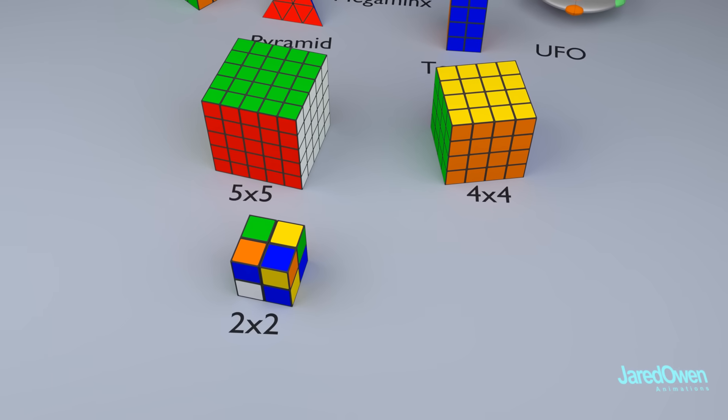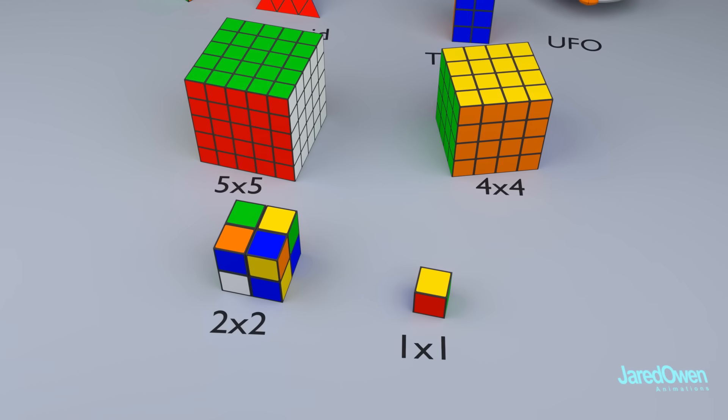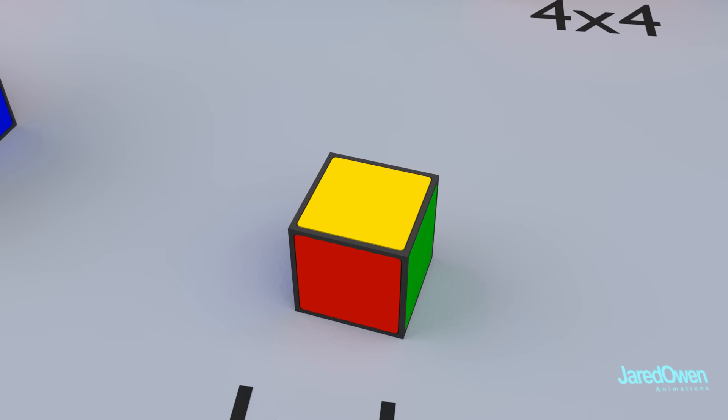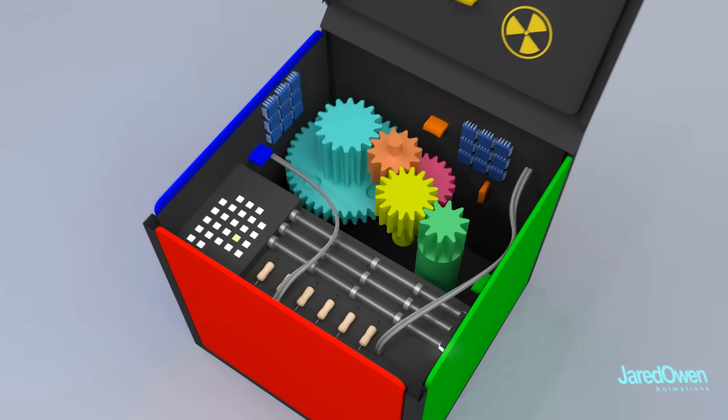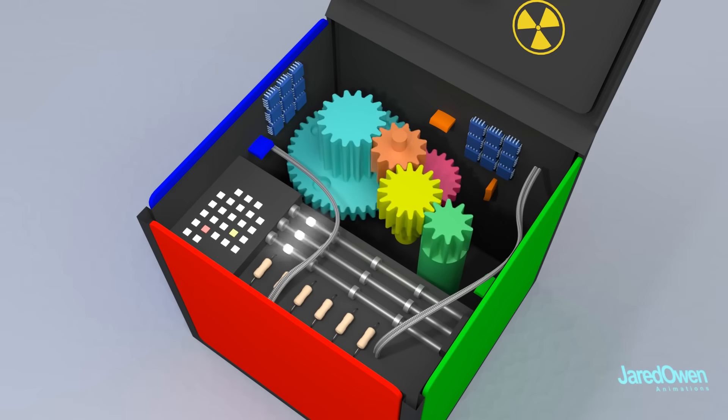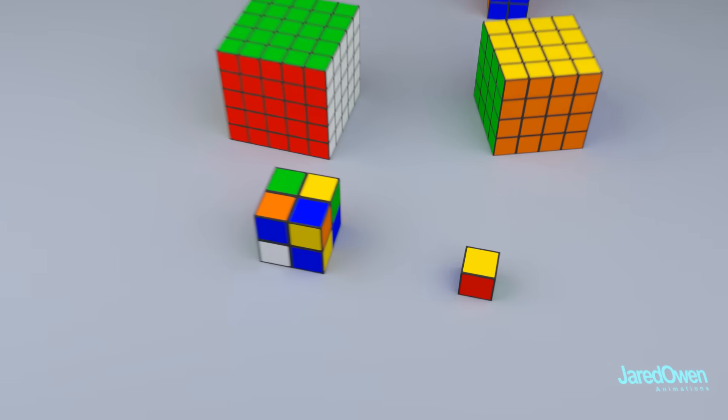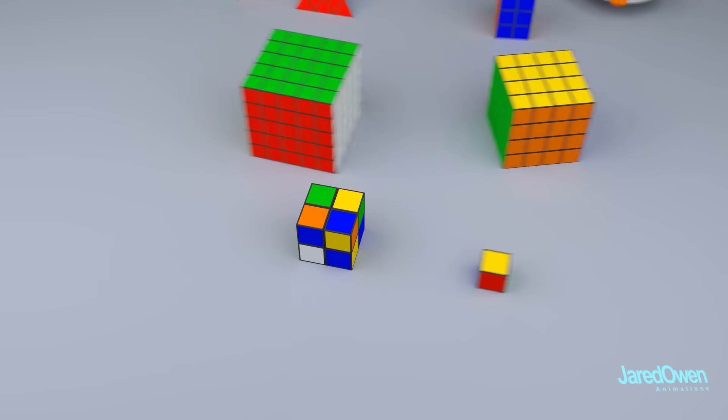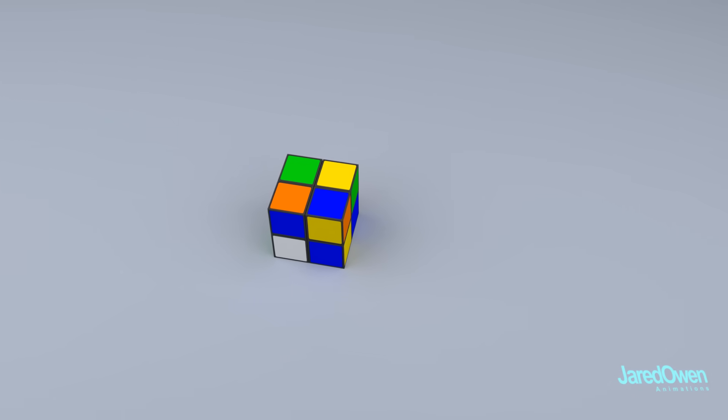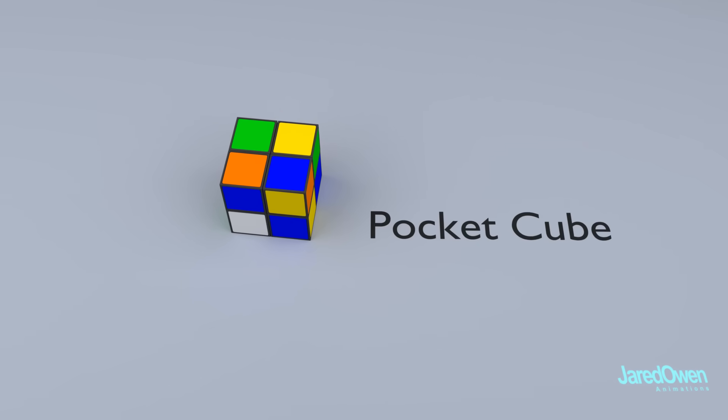I thought about doing this video on the 1x1 Rubik's Cube, but the truth is I couldn't quite get it open and I've heard it's really complex on the inside. So maybe we'll save that for another video. For now, let's focus on the 2x2 Rubik's Cube. This one is sometimes referred to as the Pocket Cube or Mini Cube.